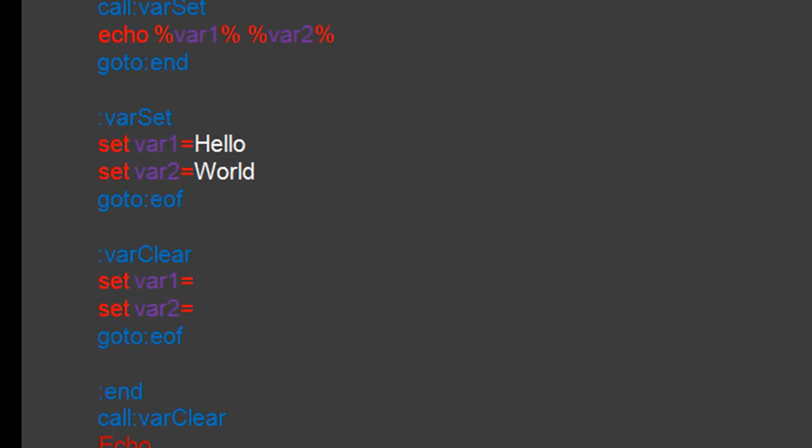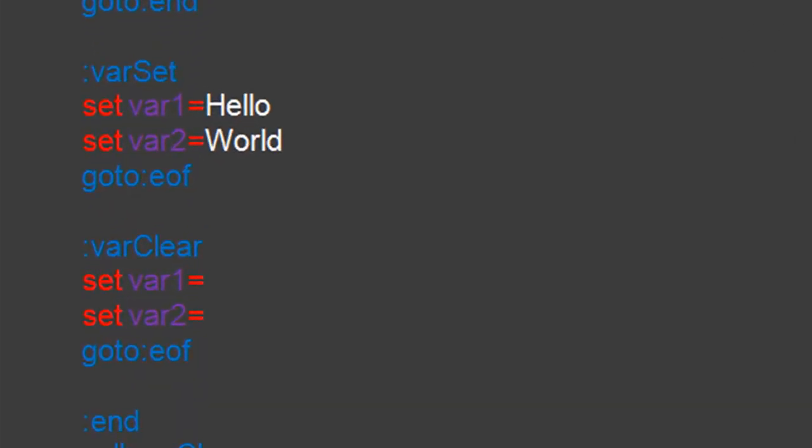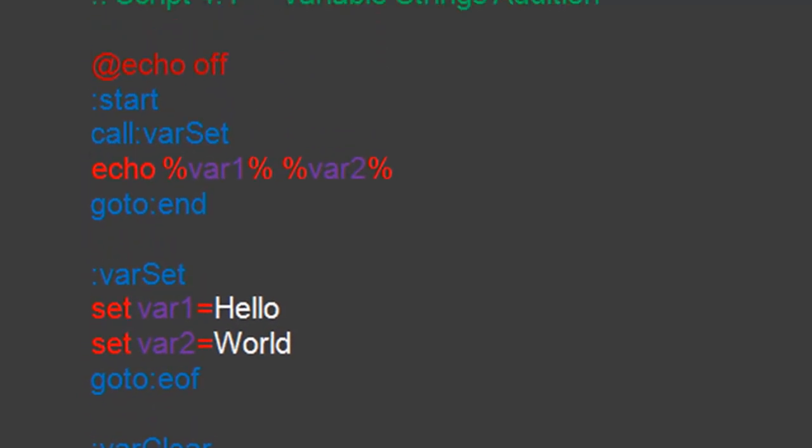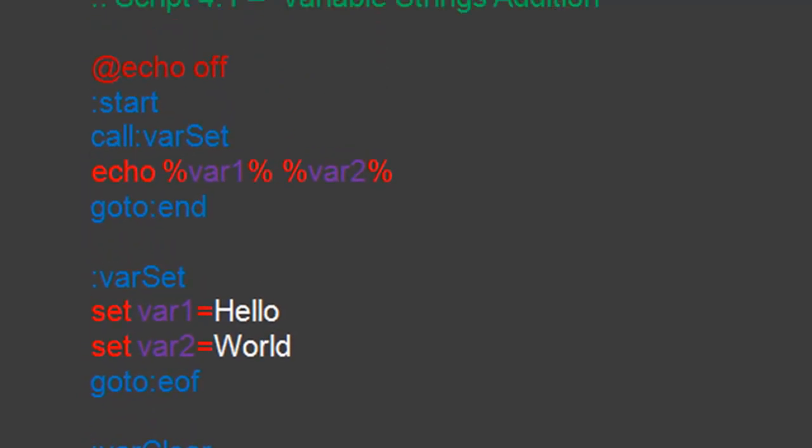In script 4.1, you can see we initialize our variables var1 and var2 in the varSet function and cleared them in the varClear function. In the start label we echoed the two variable values with a space between them.